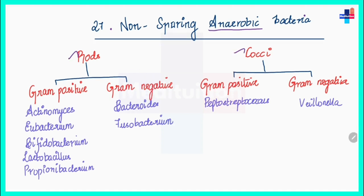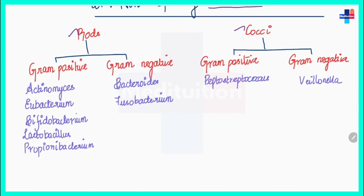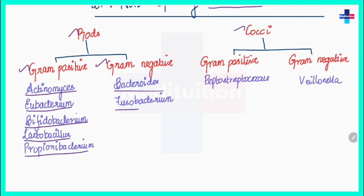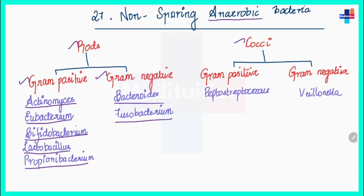In non-sporing anaerobic rods we have gram-positive rods and gram-negative rods. In gram-positive rods we have Actinomyces, Eubacterium, Bifidobacterium, Lactobacillus, and Propionibacterium. In gram-negative rods we have Bacteroides and Fusobacterium. We also have non-sporing anaerobic cocci — gram-positive and gram-negative. In gram-positive the main one is Peptostreptococcus, and in gram-negative we have Veillonella.